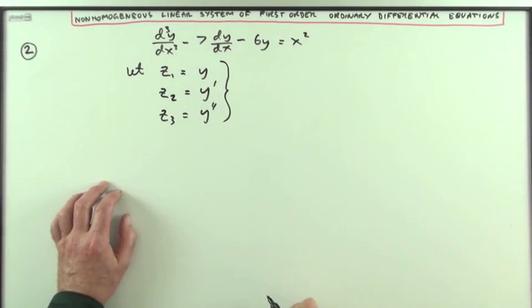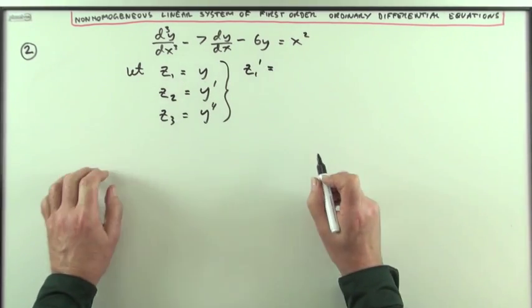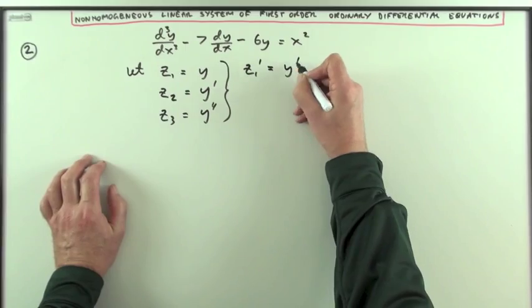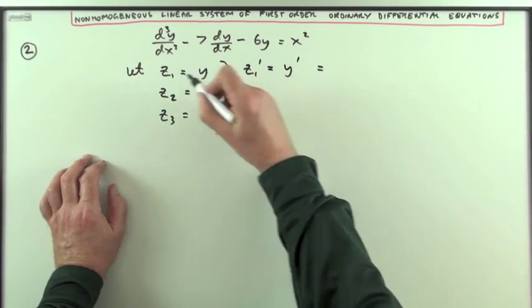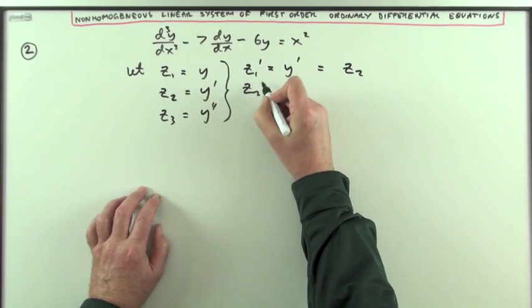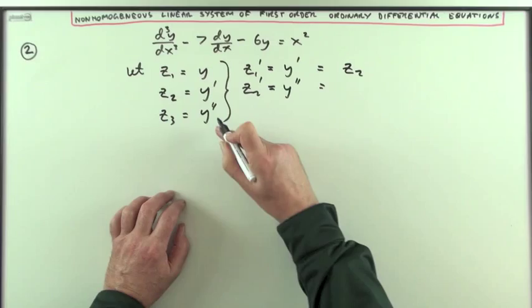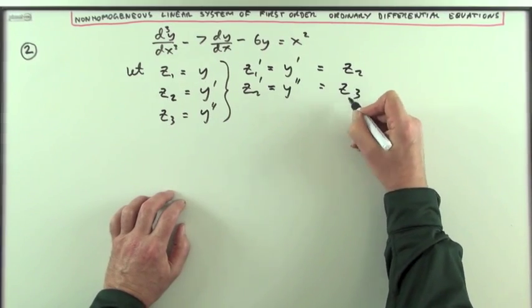From those three, I can then say, differentiating the first one, I'll have z1 dashed, the first derivative will be y dashed, and y dashed is just z2. z2 dashed will be y double dashed, and y double dashed is just z3.